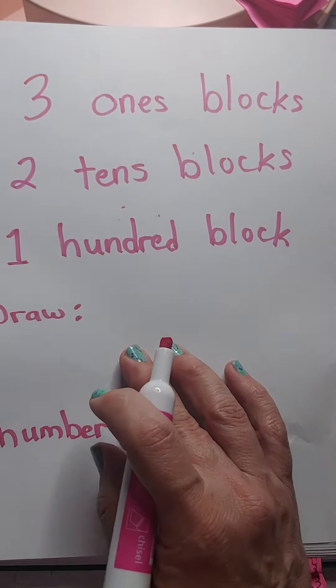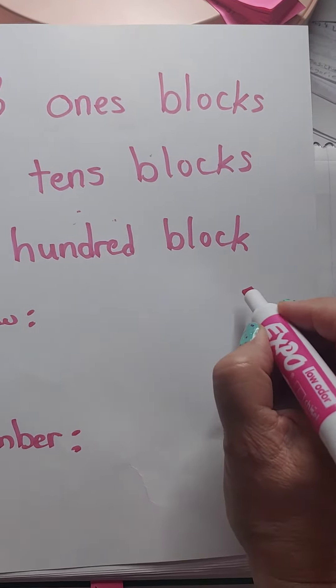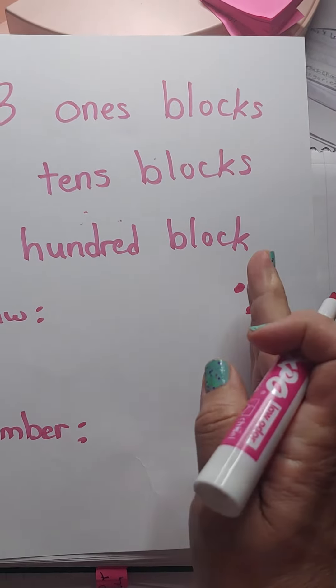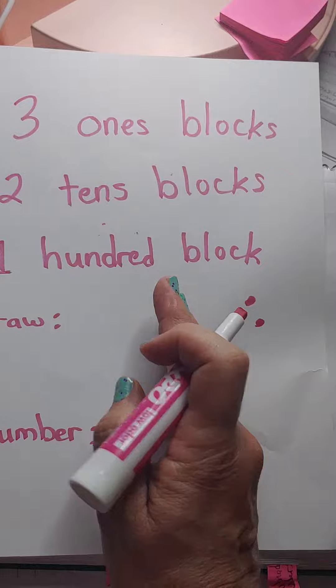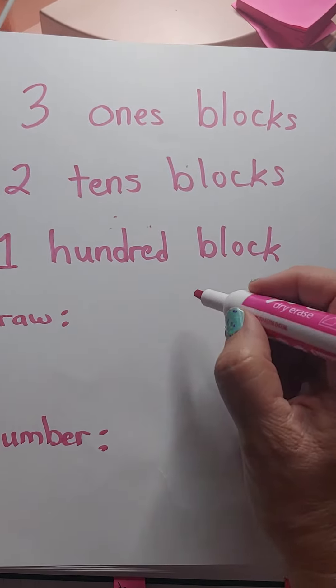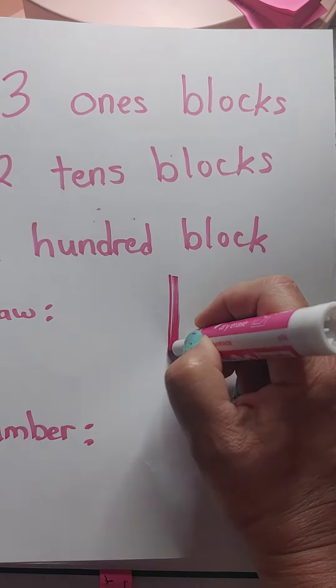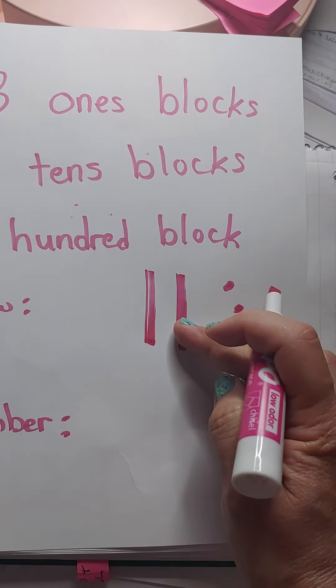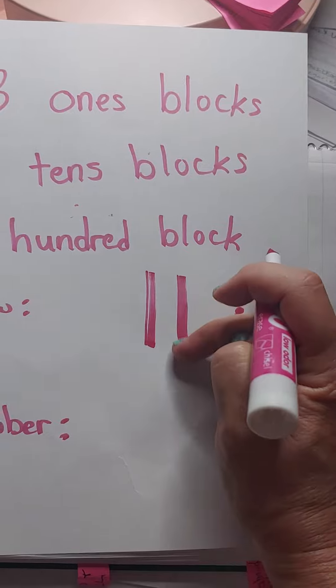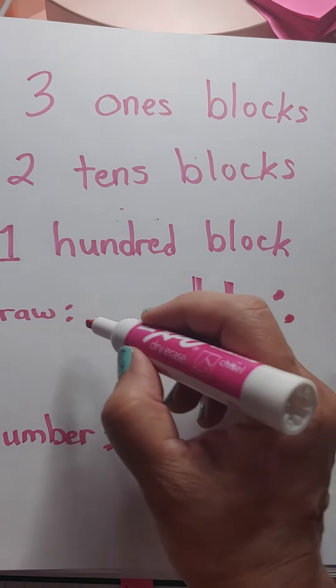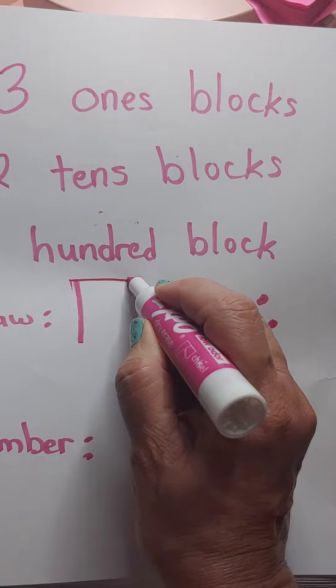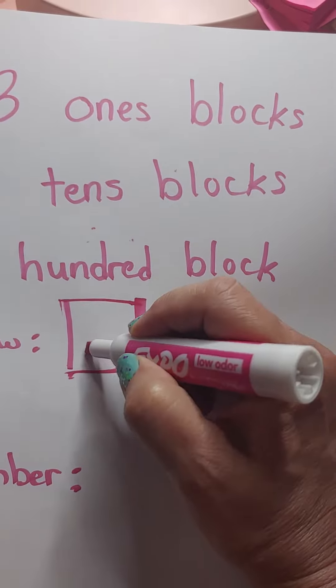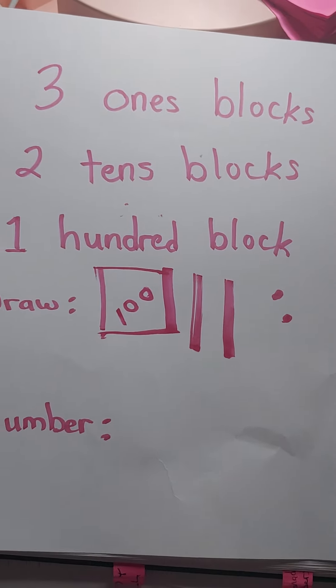Two ones blocks. I'm going to go ahead and put the ones over here because I remember the ones place is all the way to the right. Then comes the tens. Two tens blocks. Remember how to draw tens, boys and girls? We call them ten bars or ten sticks. That stands for ten. One hundred block. And we remember that the hundred block actually looks like a block. It's like a square. And I always like to write a hundred in it.